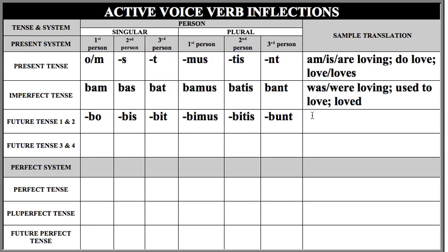So the future tense endings for first and second conjugation are stinky because they start with B-O. We know they're stinky not because they refuse to bathe, but because they are athletes who've just finished practice. We know they are baseball players because they are bunting. And we have to remember that everything else in between is B-I. The translation for the future tense is really simple: we use either 'shall' or 'will.'